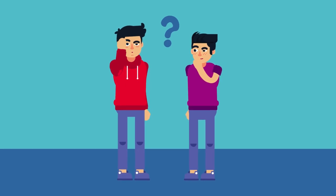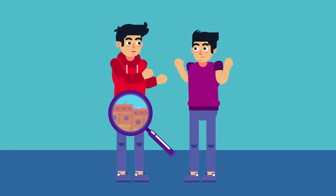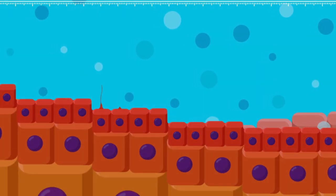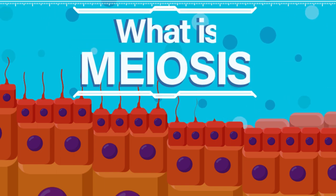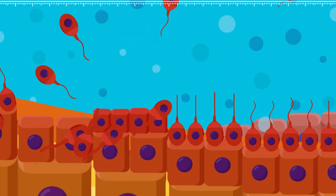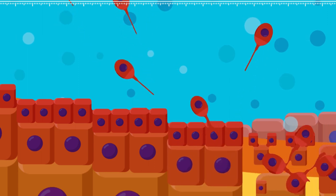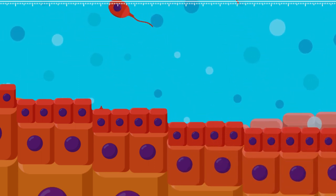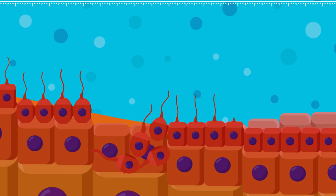Have you ever wondered why you are different from your siblings? The answer lies within the amazing process of meiosis. What is meiosis? Meiosis is a process where a single cell divides twice to produce four cells containing half the original amount of genetic information.